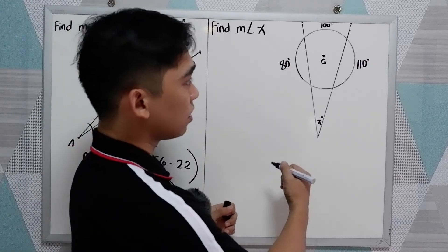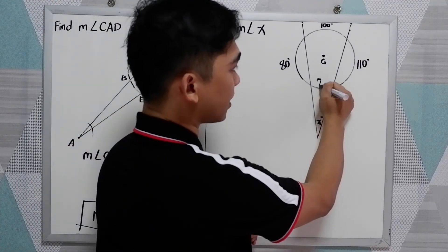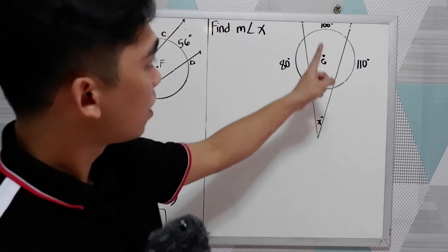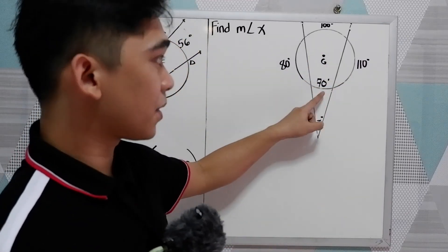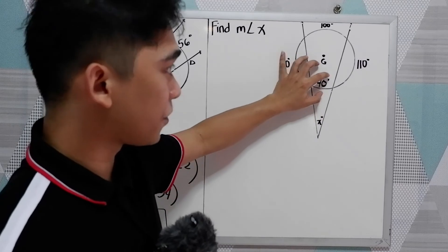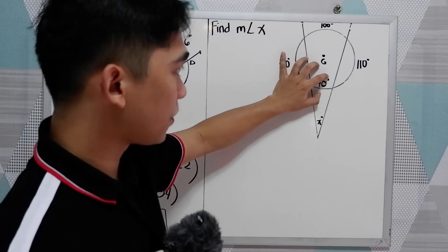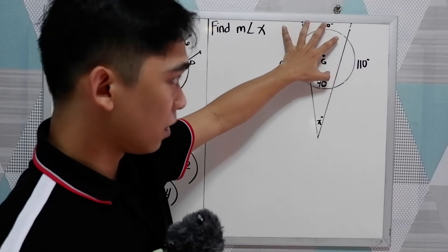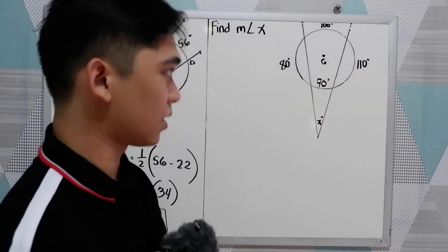Okay, let's check. 80 plus 70, that is 150. 150 plus 100, 250. Plus 110, 360. Okay.